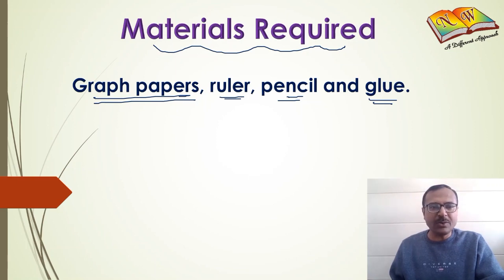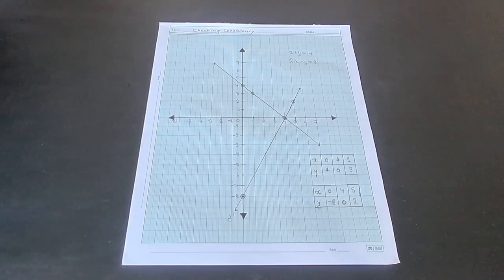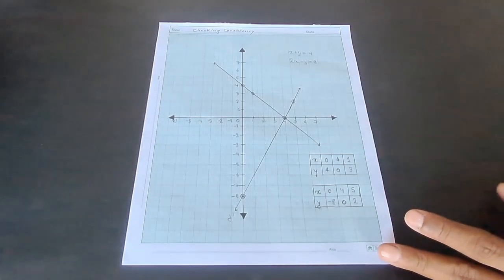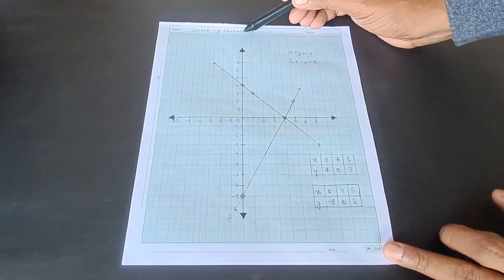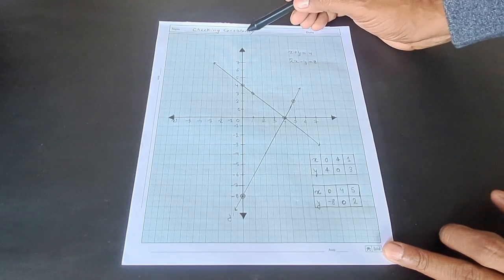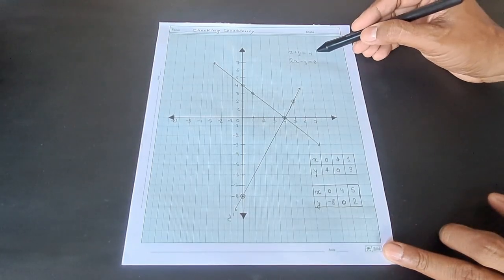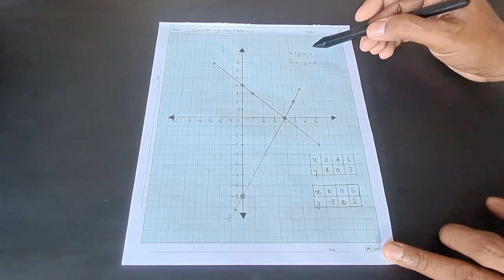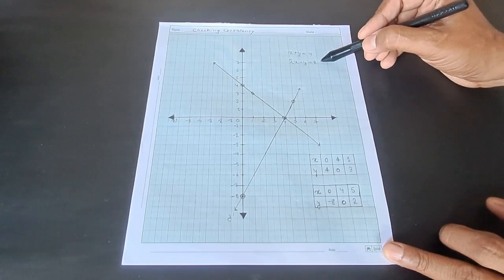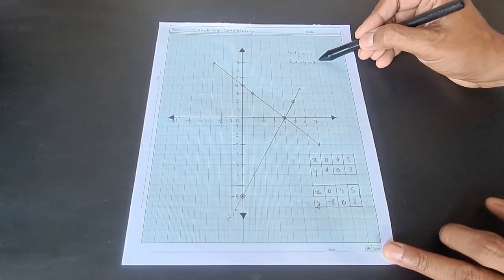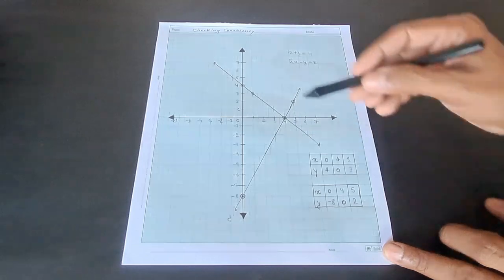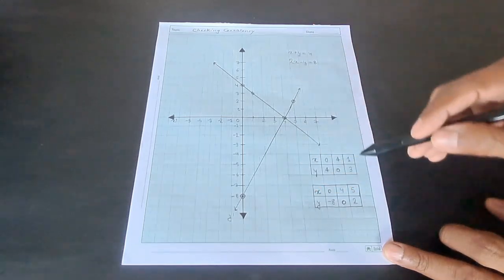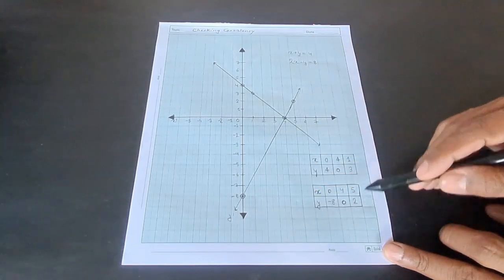Let us see how this activity is performed. For checking the consistency of a pair of linear equations in two variables, we will use the graphical method. Here we have taken two different linear equations: one is x + y = 4 and the other one is 2x − y = 8. We have plotted the graph of the two equations using three solutions of each equation.